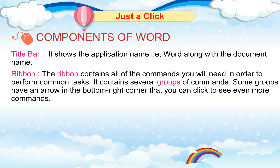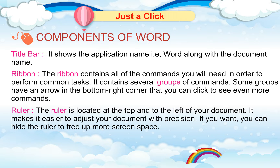Ribbon: The ribbon contains all of the commands you will need in order to perform common tasks. It contains several groups of commands. Some groups have an arrow in the bottom right corner that you can click to see even more commands. Ruler: The ruler is located at the top and to the left of your document. It makes it easier to adjust your document with precision. You can hide the ruler to free up more screen space.